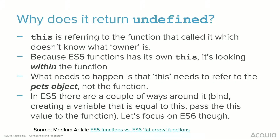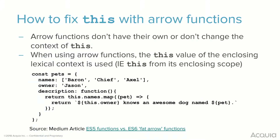In ES6, if we change this to an arrow function, because they don't have their own context of 'this,' it takes the 'this' value of the enclosing lexical context — basically 'this' from the enclosing scope. If we're thinking about scope, we're thinking about what's within those curly braces. Now, if we do it this way, it actually logs the owner for every single item.